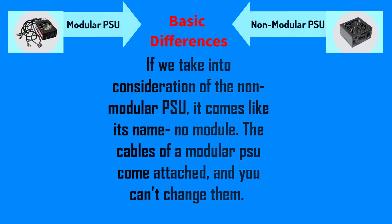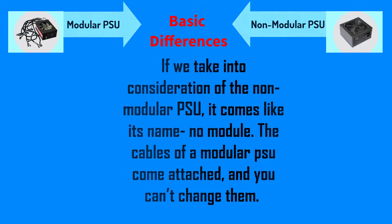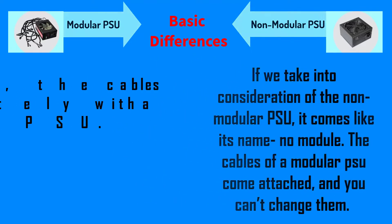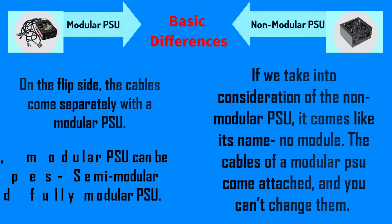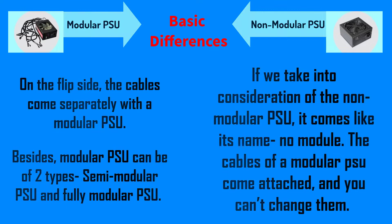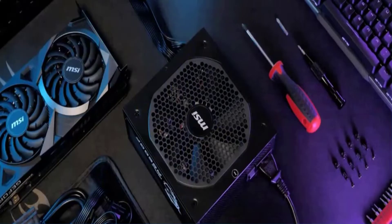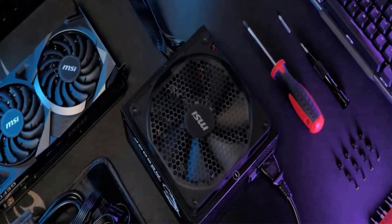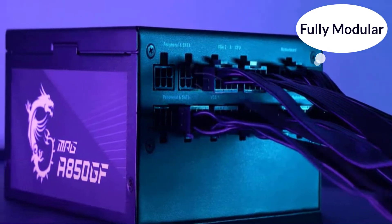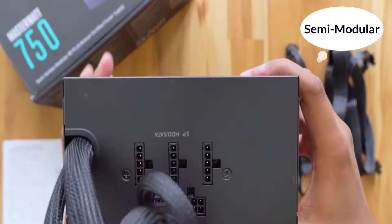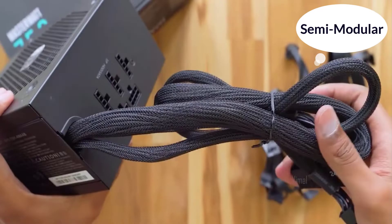Now let's discuss the basic features. If we consider the non-modular PSU, it comes as its name suggests — no modules. The cables of a non-modular PSU come attached and you can't change them. On the flip side, cables come separately with a modular PSU. Modular PSUs can be of two types: semi-modular and fully modular. The fully modular PSU gives you complete access inside the PSU, while the semi-modular PSU comes with half of the cables already connected.